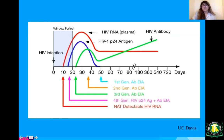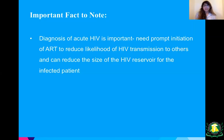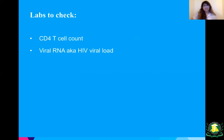An important fact: the diagnosis of acute HIV is extremely important because the guidelines say you want to start treatment immediately. Prompt initiation of antiretrovirals — ART — reduces the likelihood of HIV transmission to others and can reduce the size of the HIV reservoir for the infected patient. Important labs to check are the CD4 T-cell count and the viral RNA — the viral load. These are two key things in the diagnosis of HIV and AIDS, and I'll cover opportunistic infections associated with CD4 counts in this lecture.